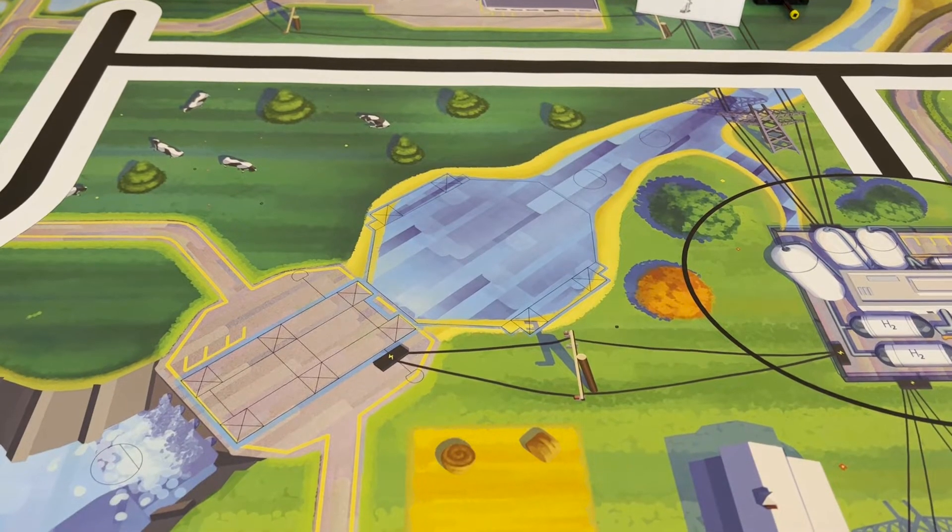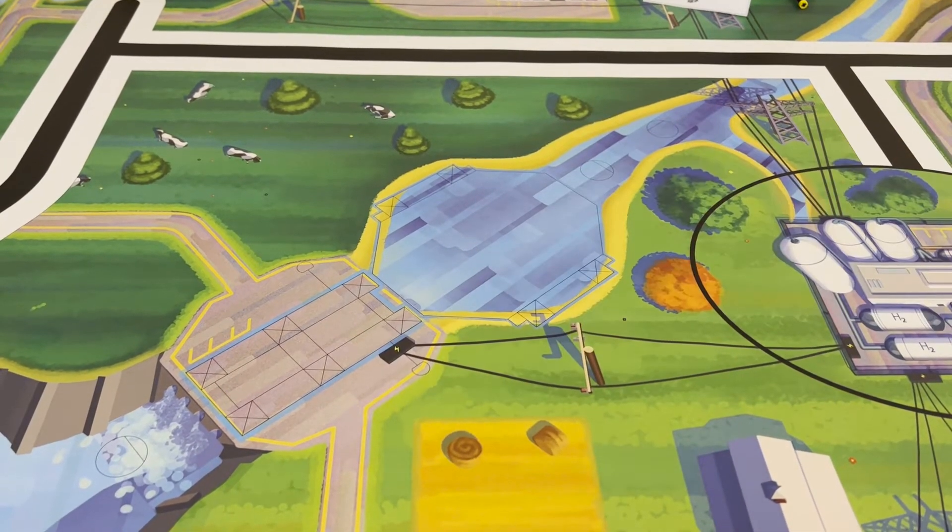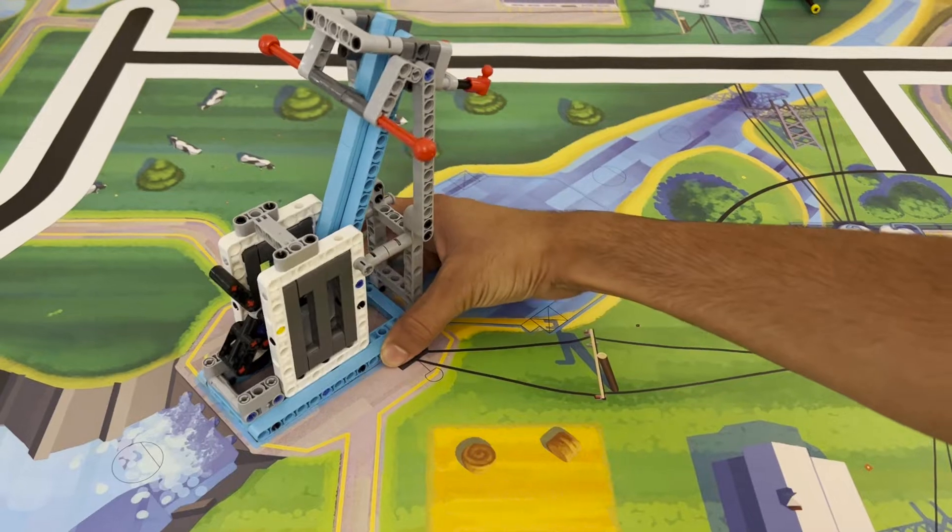Begin by placing the models on the correct location on the challenge mat, using the robot game rulebook as your guide.